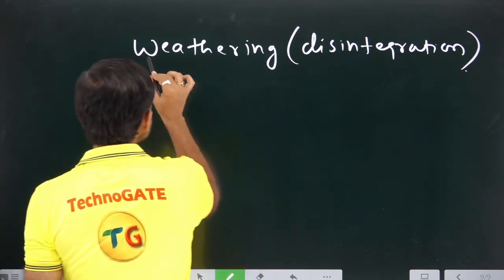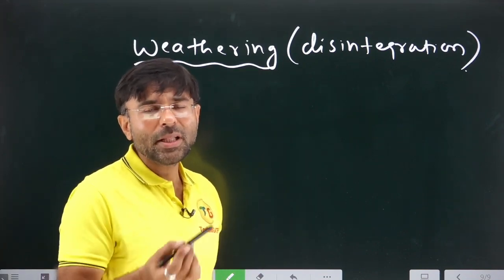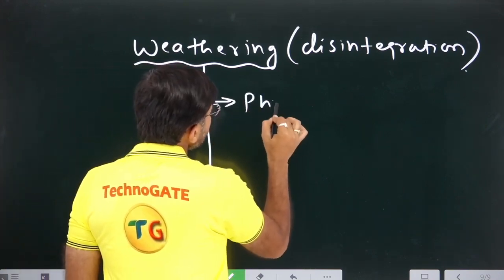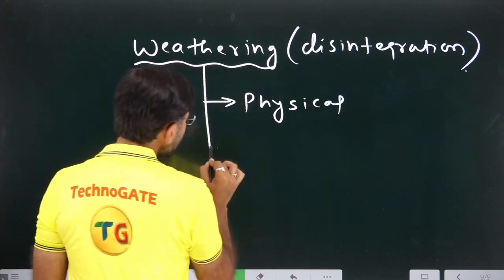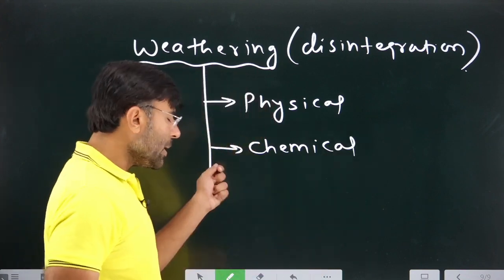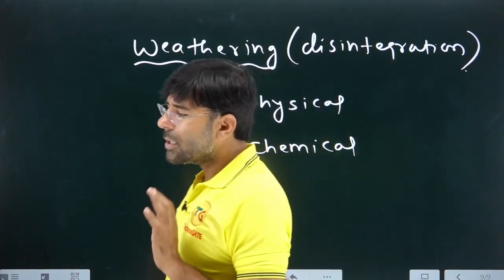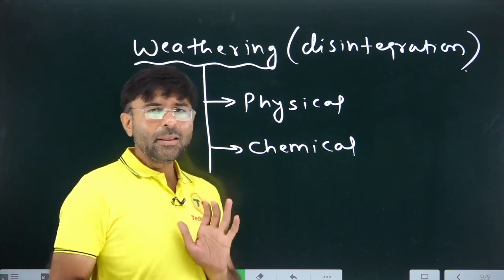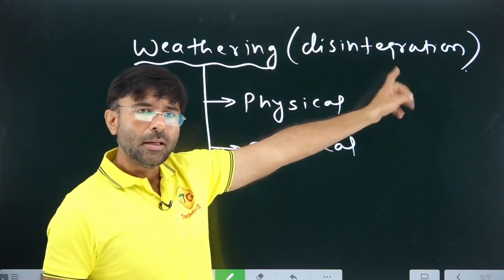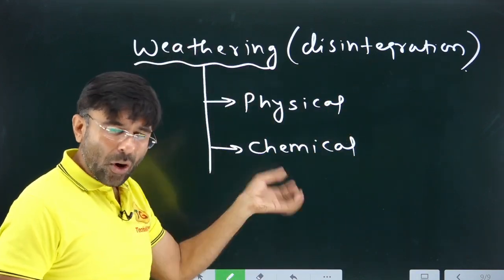Now, this weathering — how is the rock being disintegrated? The weathering is actually of two types. It can be classified as physical weathering or chemical weathering. There is also a third category, biological weathering, but that is not our topic of discussion. For us, weathering is simply of two types: physical or chemical weathering. The rock is being disintegrated either physically or chemically.